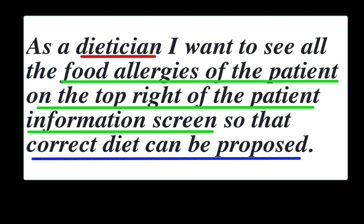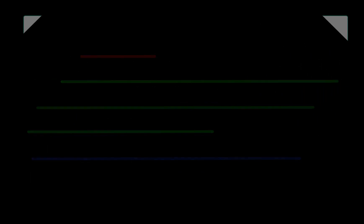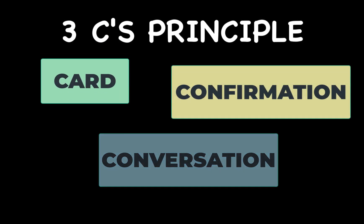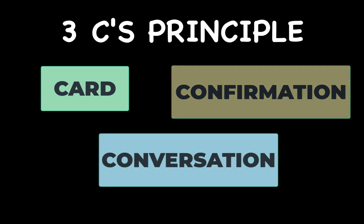Now we know the format of a user story. Let's also see how to write user stories with perfection. A very effective method offered by Ron Jeffries is the three C's principle. The three C's comprises of card, conversation, and confirmation. Card here symbolizes that a user story should be small enough to be expressed on a small 3x5 inch card, yet effective.